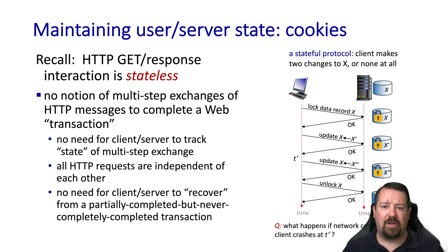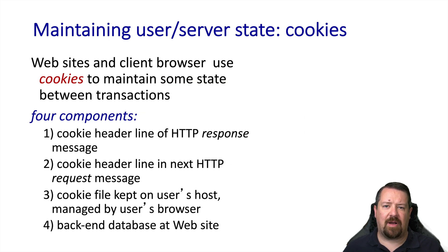If there were some disruption along the way, the client would be able to recover by reading the database state and just sending the next message in the sequence — it wouldn't have to worry about resynchronizing with some protocol-level state because none is maintained. This is effectively the process used to handle cookies. Cookies are small pieces of information sent by web servers to clients via the headers of response messages. The client stores these pieces of information and includes them on future request messages, allowing the server to associate requests with a particular user that maps to some entry in its database.